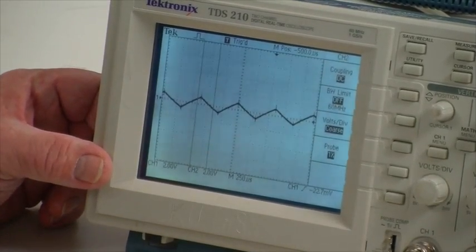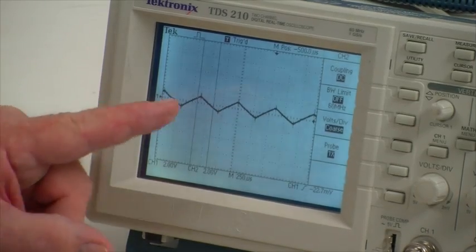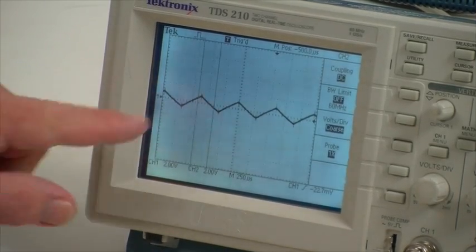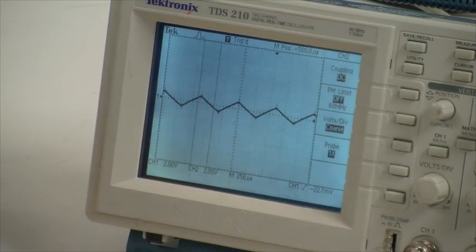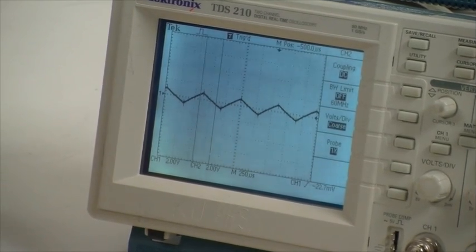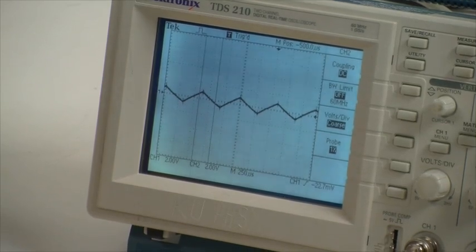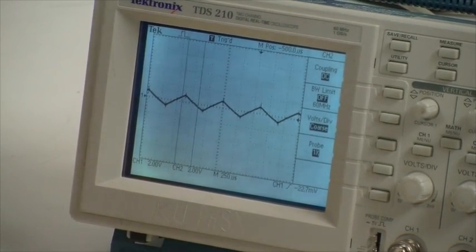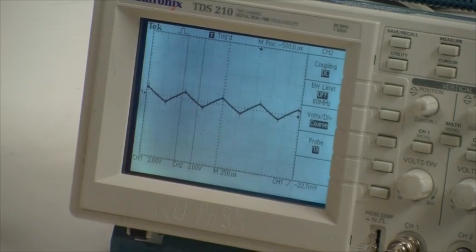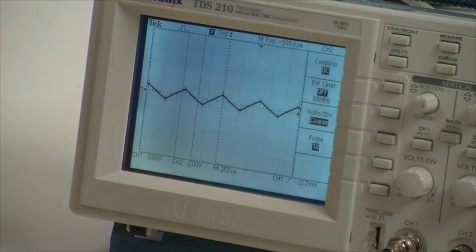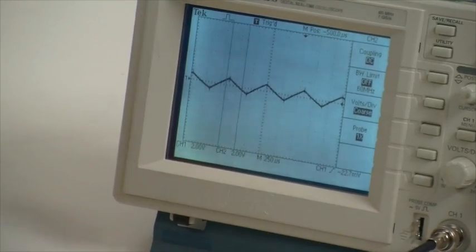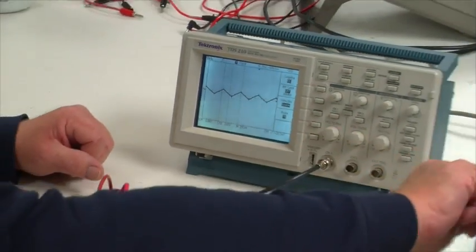Now, this is supposed to be a square wave. So why does it look like a sawtooth? Well, the problem is that right now the frequency of the function generator is so high that the capacitor never has time to get fully charged. So let me turn this frequency down.